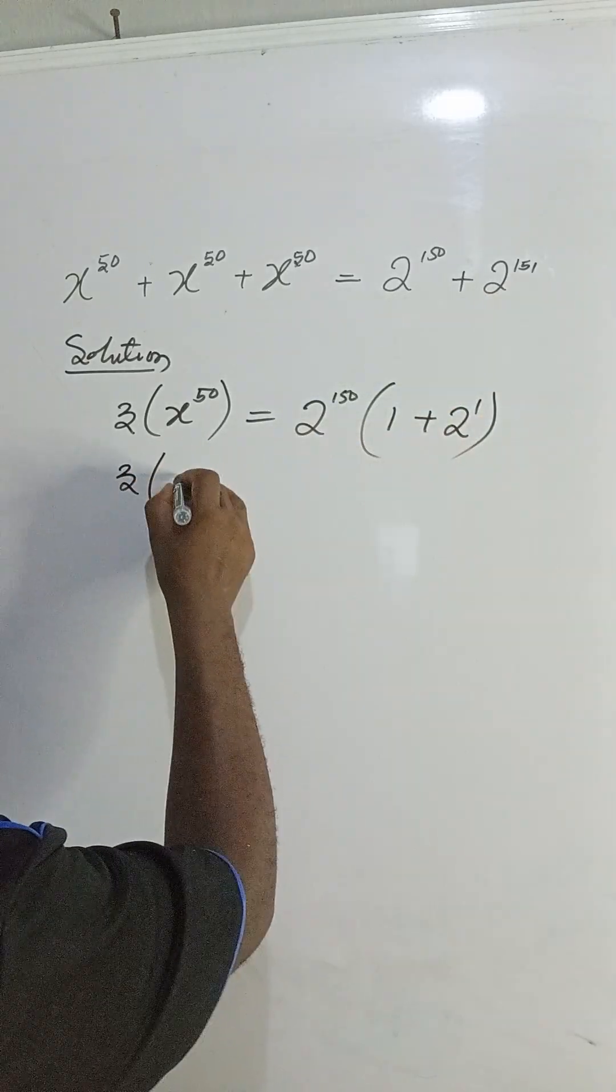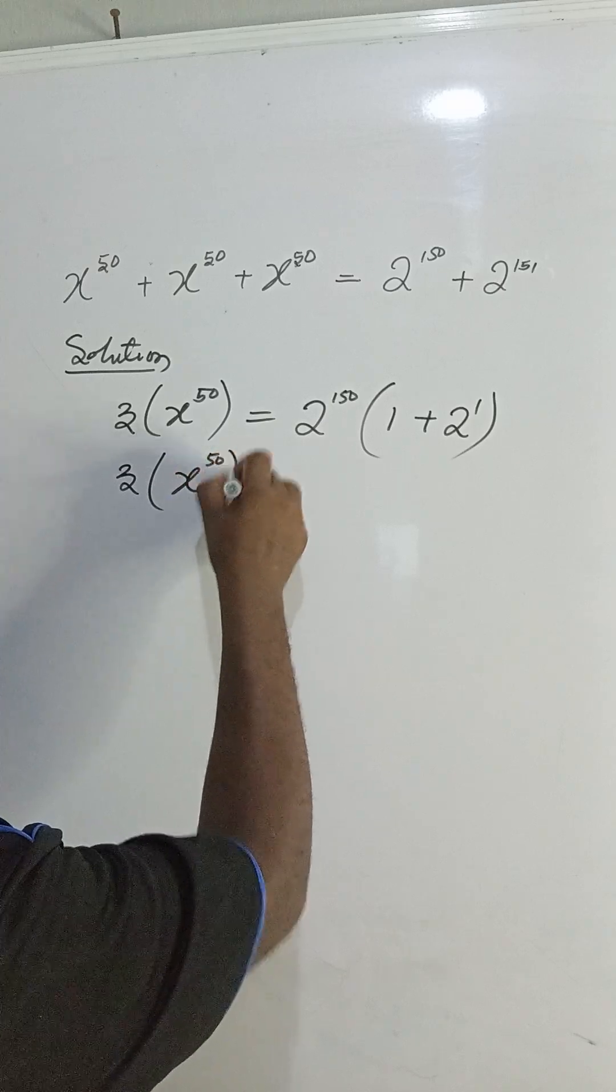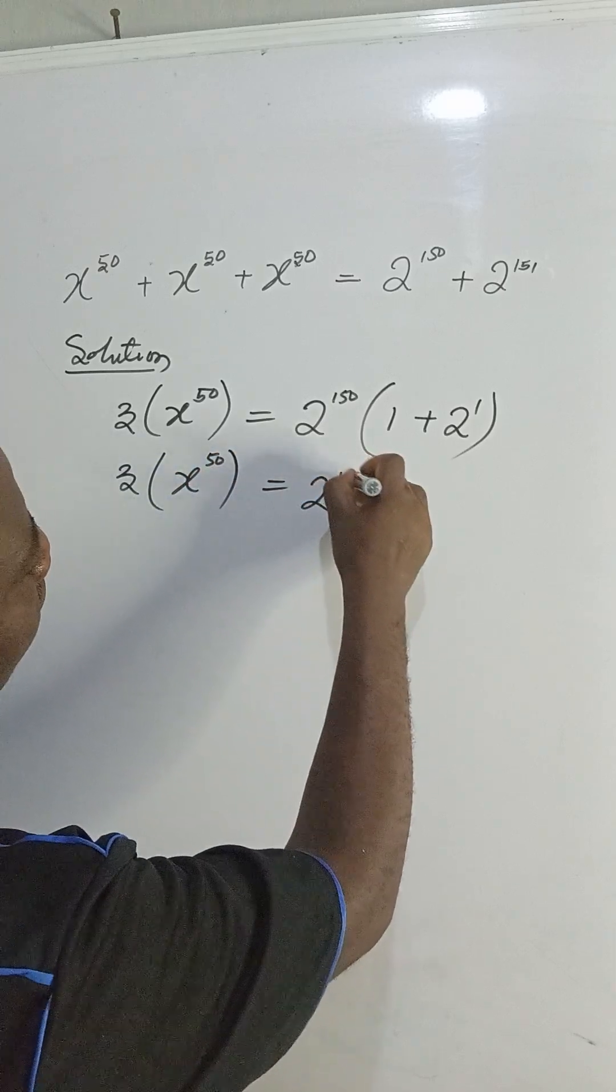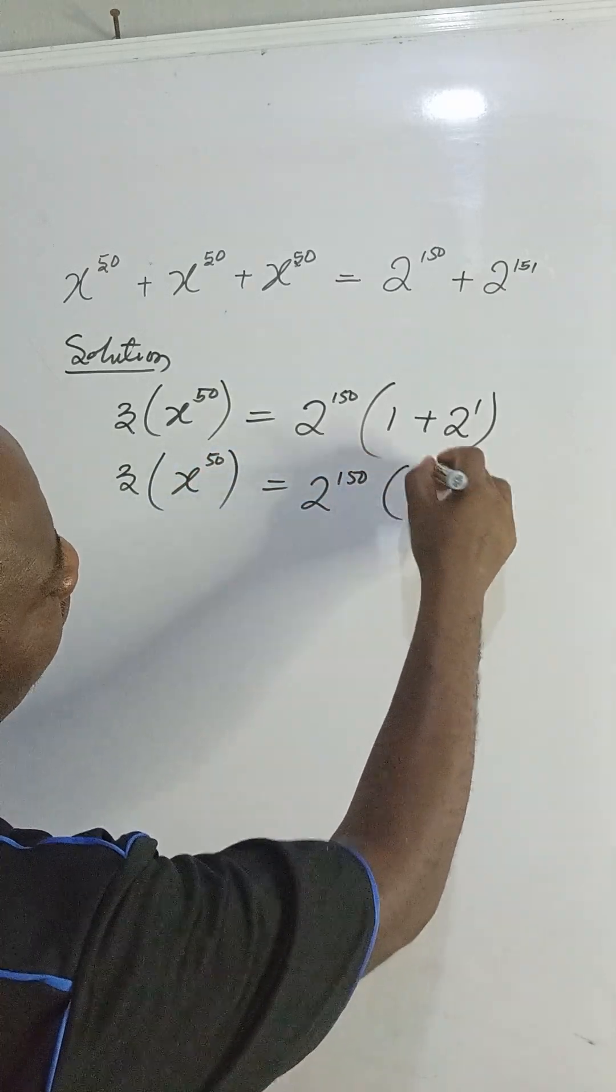So we have 3 times x to the power of 50 equal to 2 to the power of 150 times 3.